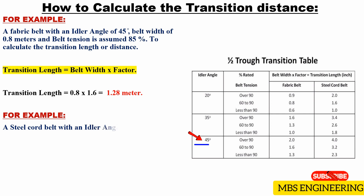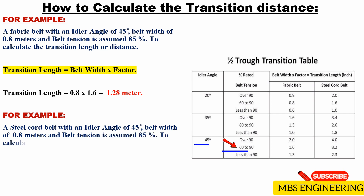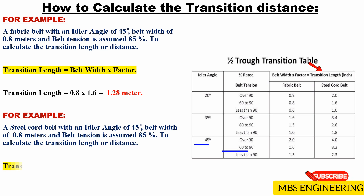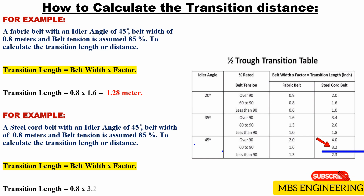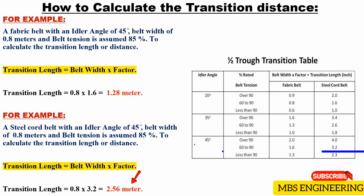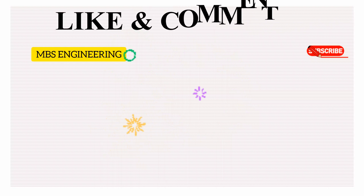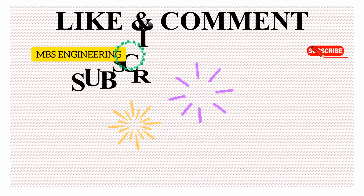Next sample example: A steel cord belt with an idler angle of 45 degrees, belt width of 0.8 meters, and belt tension assumed at 85%. Transition distance = belt width × factor = 0.8 × 3.2. Therefore, the obtained minimum recommended transition distance is 2.56 meters. We hope everyone understands the transition distance, its purpose, and how to calculate it.